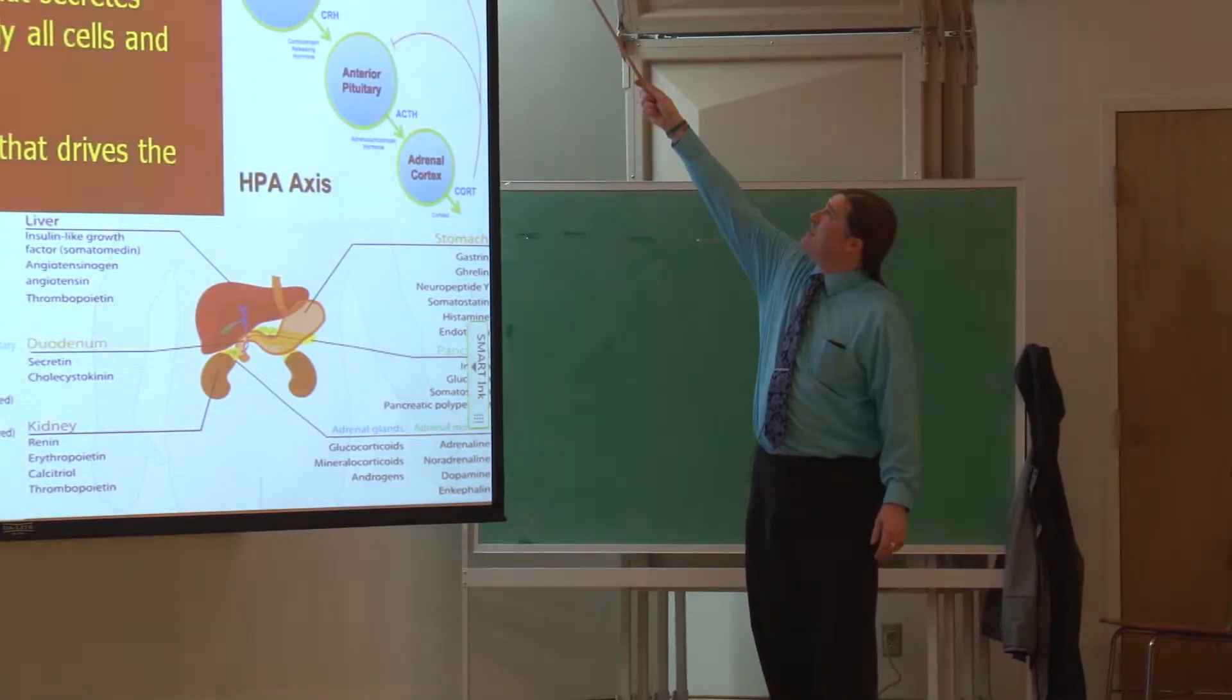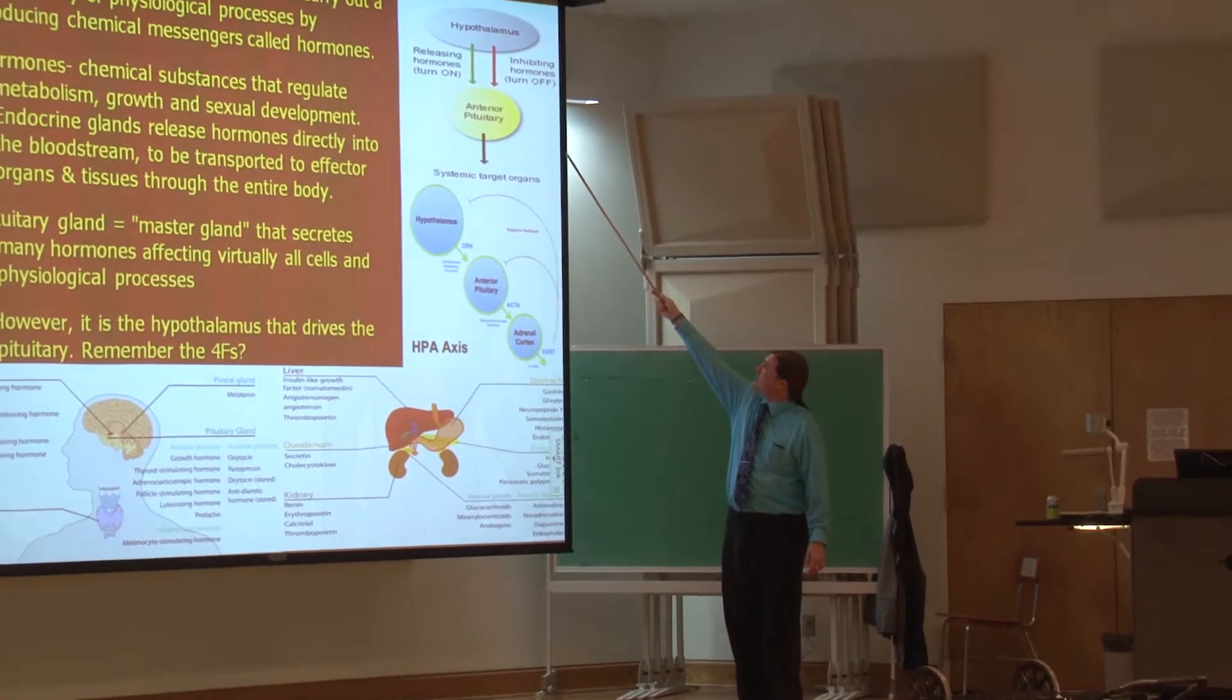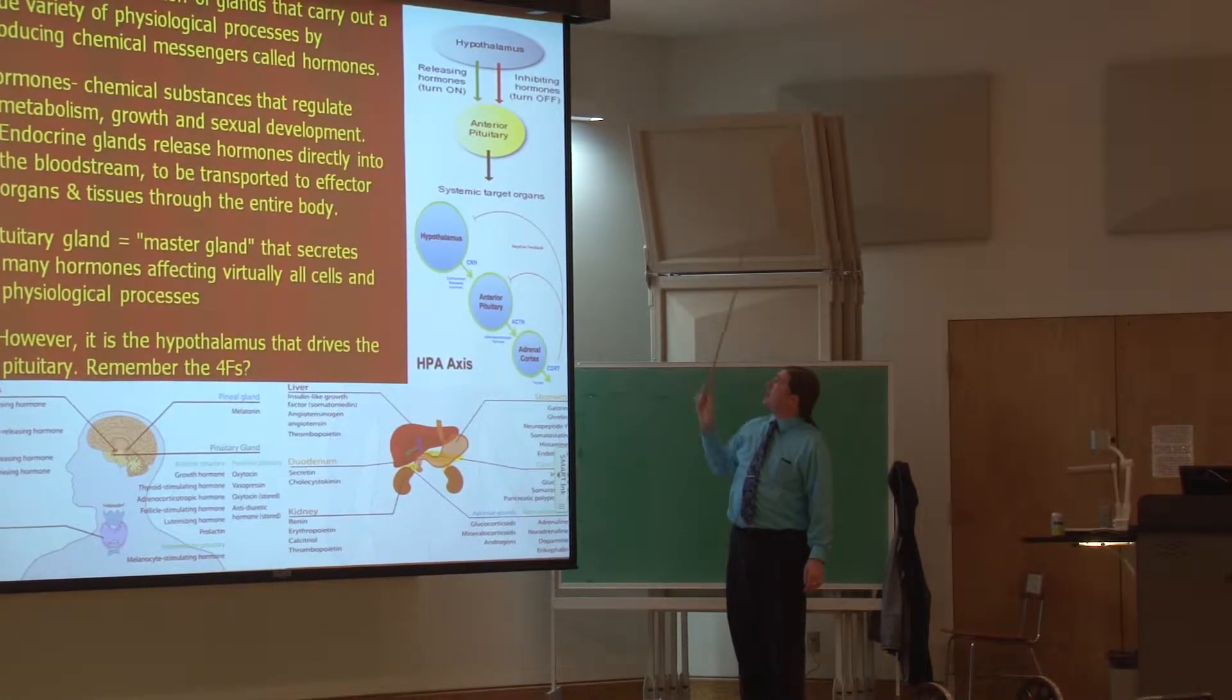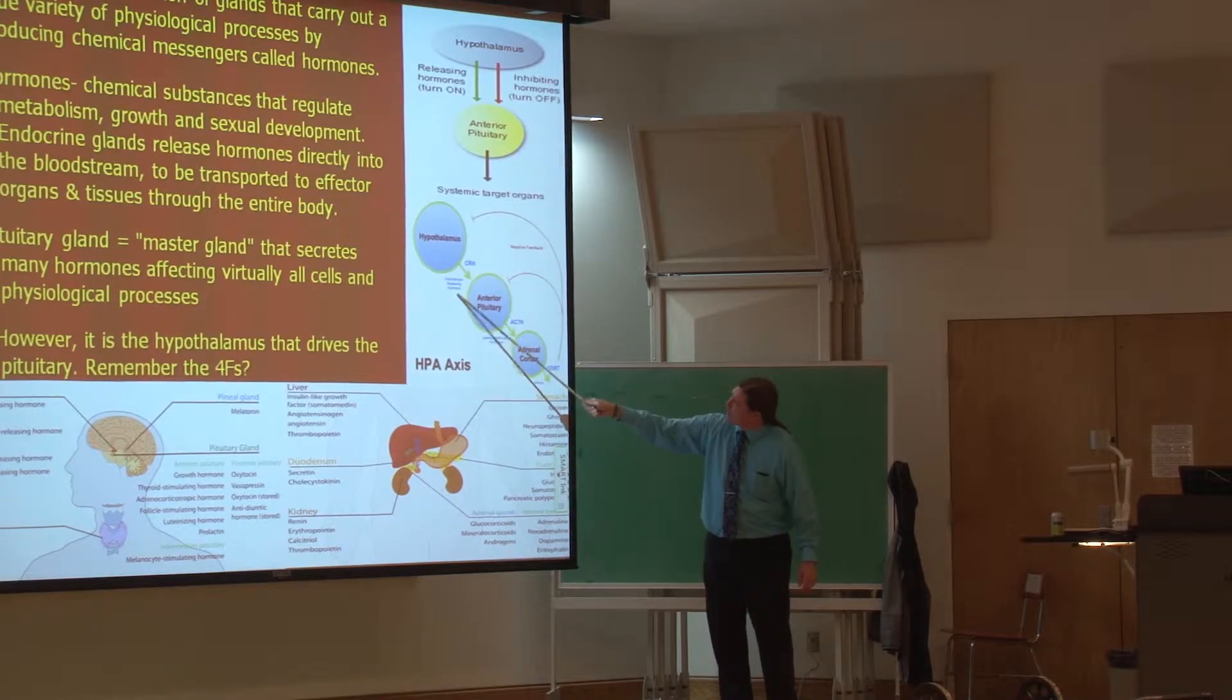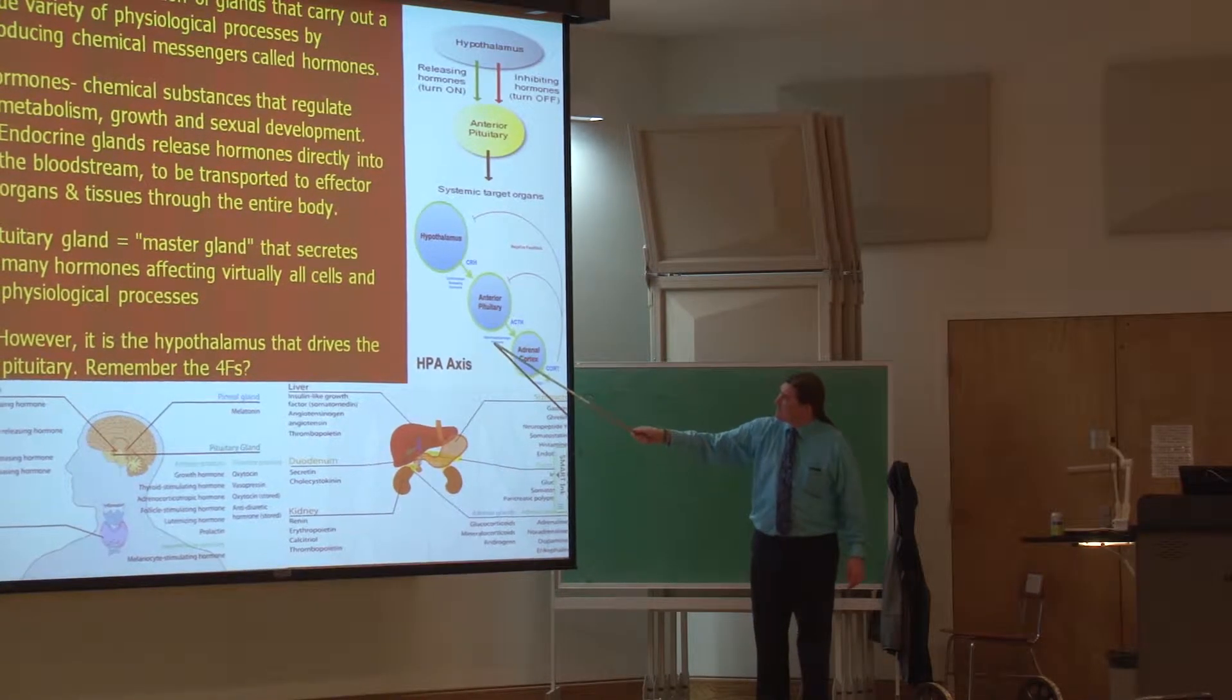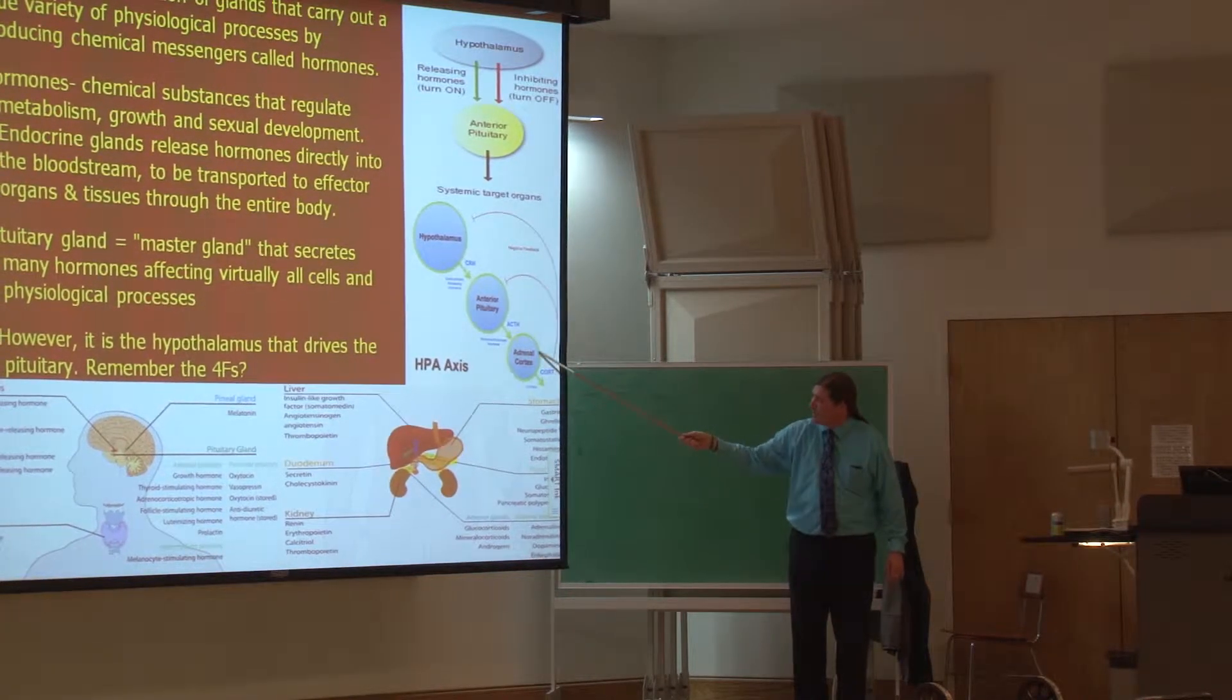So you've got the hypothalamus that has releasing hormones that turn things off and inhibiting hormones that turn things on when they release and then off when they come back in a negative feedback loop. So if we're looking at that fight or flight response, you've got the hypothalamus releasing corticotropin releasing hormone onto the pituitary, which then releases adrenocorticotropic hormone which goes to the adrenal cortex, adrenal, so you know renal.